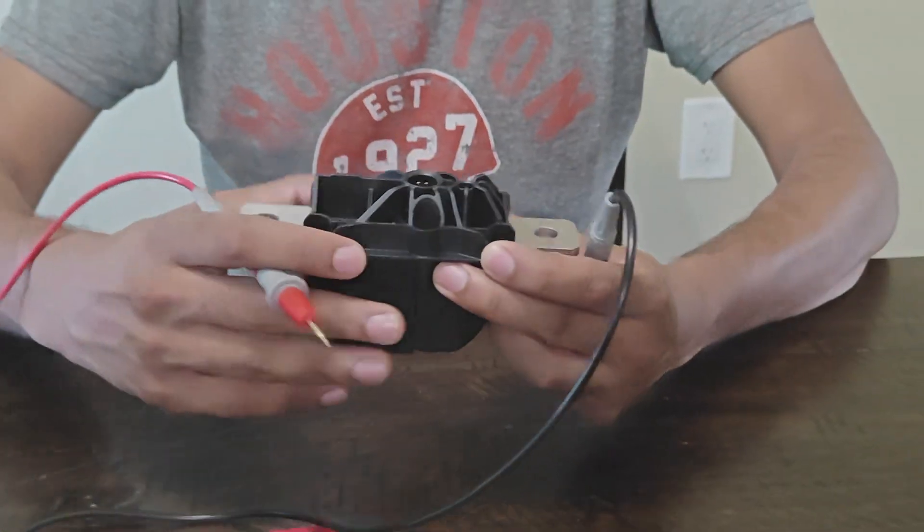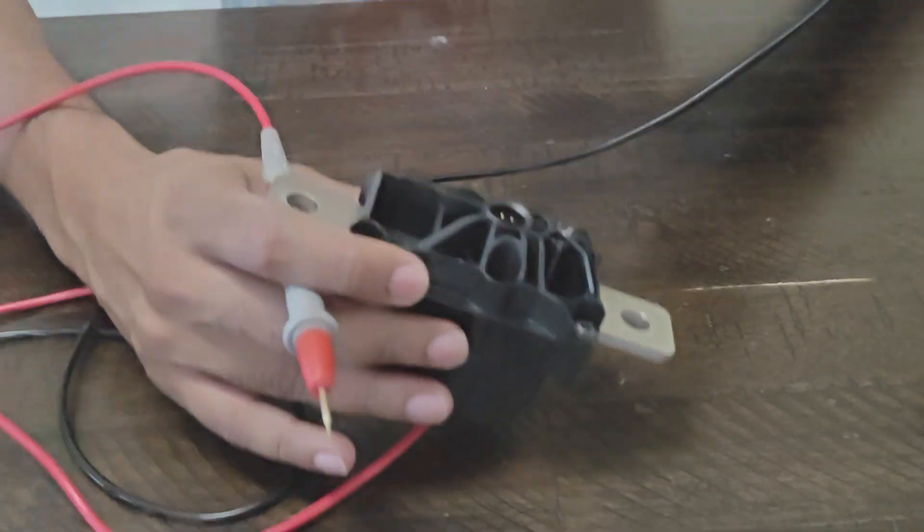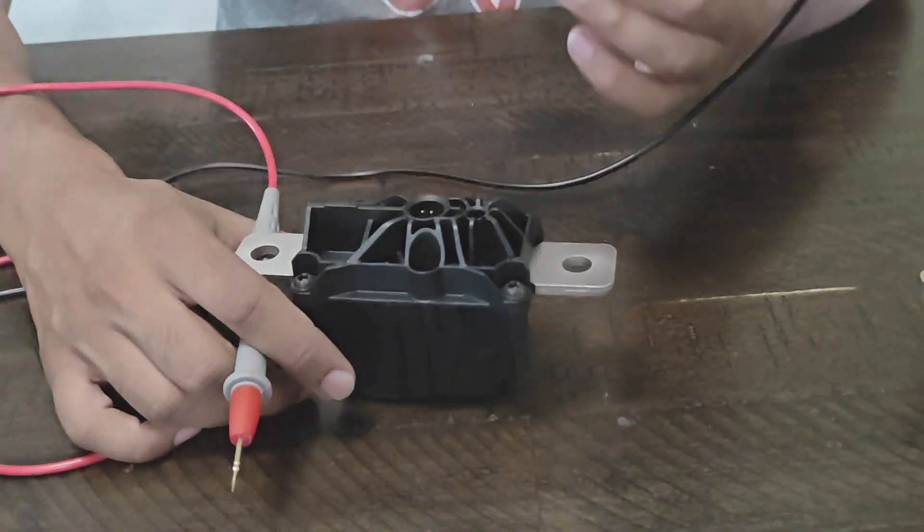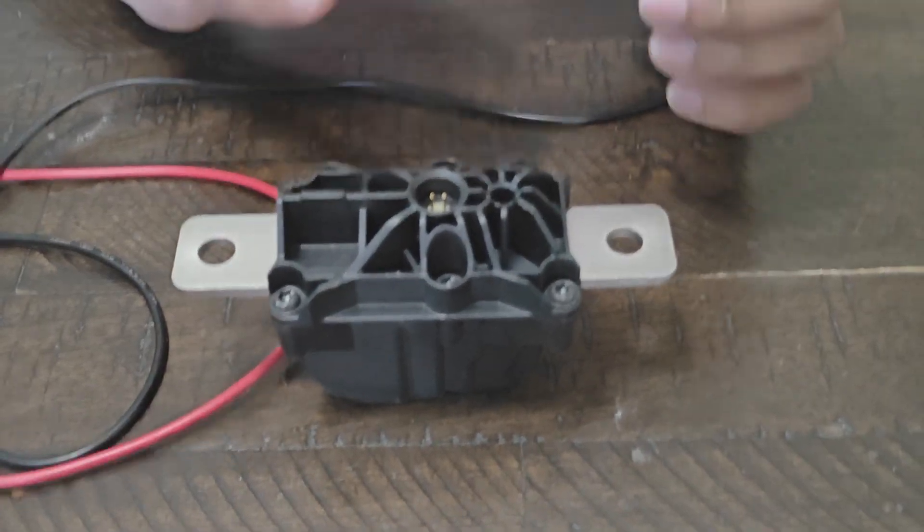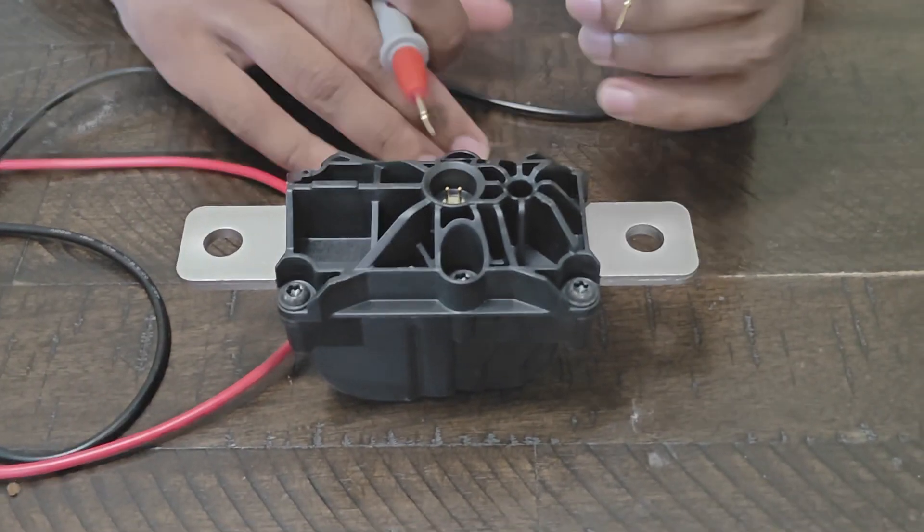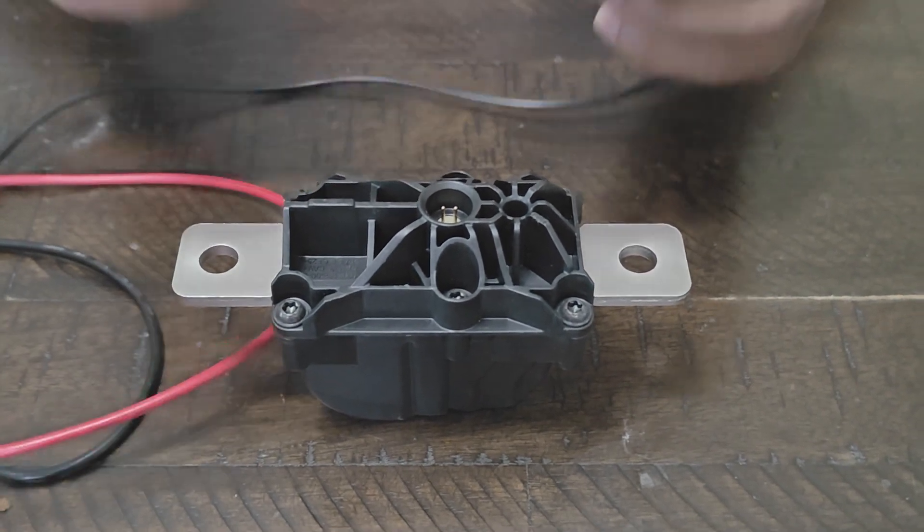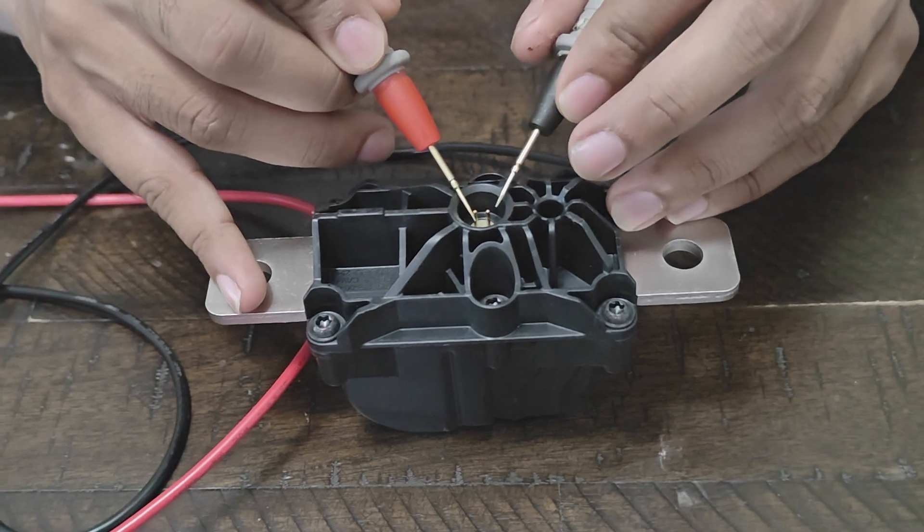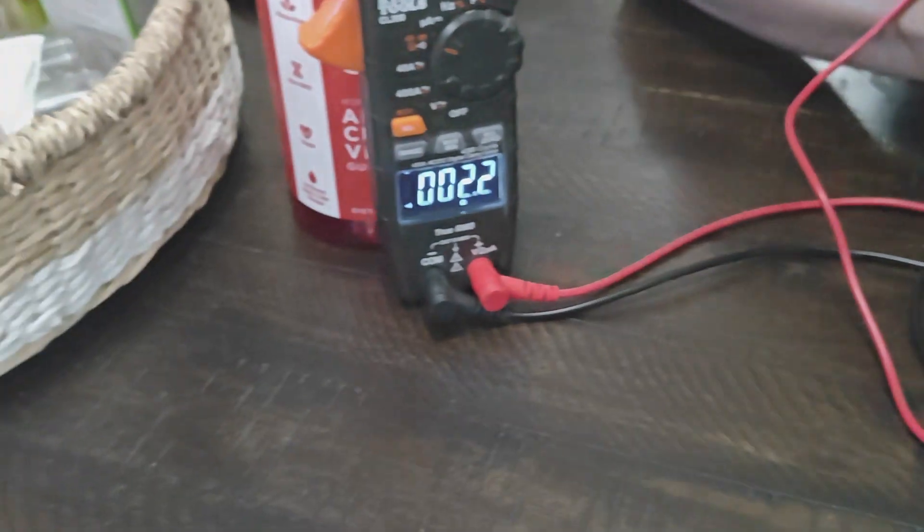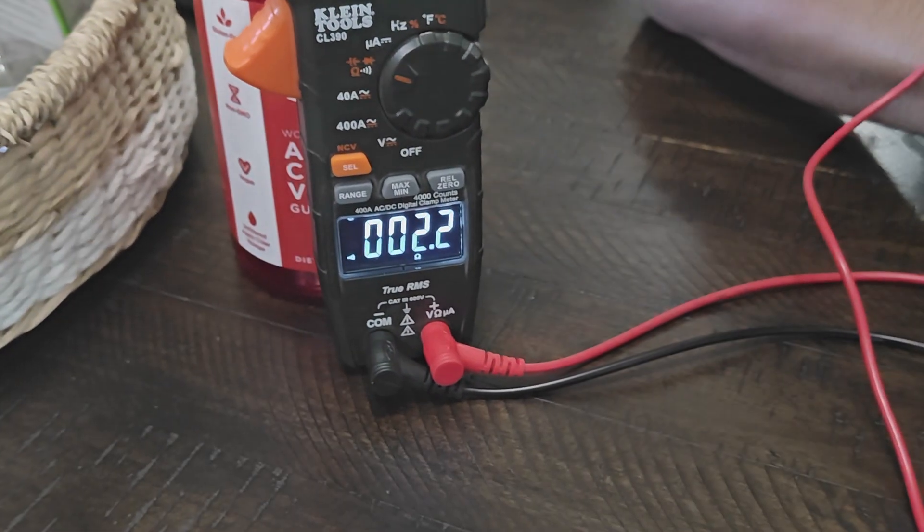Now the second way to check it is on the resistor. On the Model 3 and Y it's between 2.1 to 2.2 ohms. Same thing, just touch it on each end and you'll see 2.1 to 2.2.